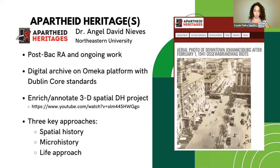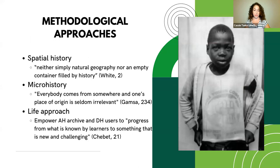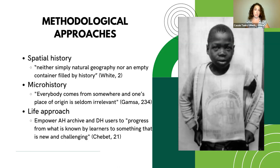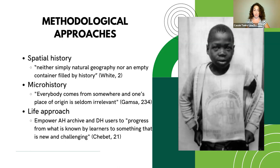Three methodologies became crucial in that approach: spatial history, micro history, and life approach. Spatial history addresses space in both abstract and physical forms and argues that space is neither simply geography nor an empty container filled by history — space is lived and experienced, transcending geographical boundaries. The understanding and analysis of intellectual, personal, political, and social space helps add texture and context to the physical space of Soweto, the Black township outside Johannesburg that is the center of this archive. Taking a micro history approach is critical because everybody comes from somewhere and one's place of origin is seldom irrelevant — it pushes against the practice that only representative lives can be used for historical purposes.